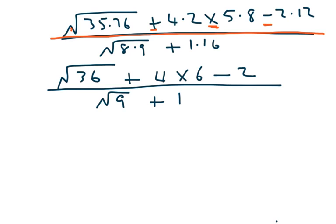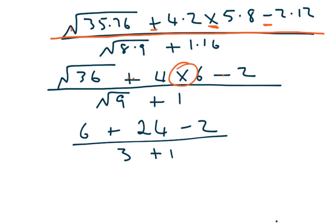And now I do the next step is obviously the square root of 36 is 6, plus now. I'm not going to do 6 plus 4. That would be wrong. Because the first thing I have to do is I have to do this multiplication. That's more important than the plus and the minus. So, that's going to give me 24, minus 2, over the square root of 9 is 3, plus 1.